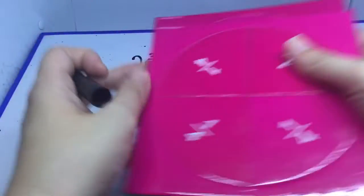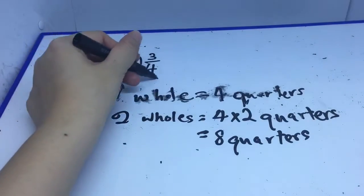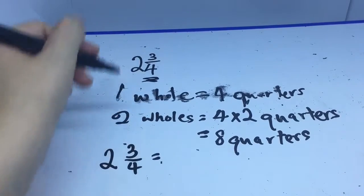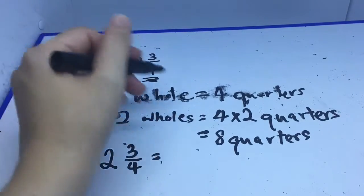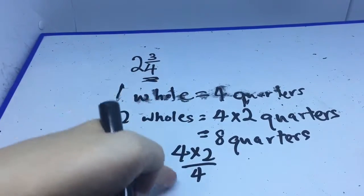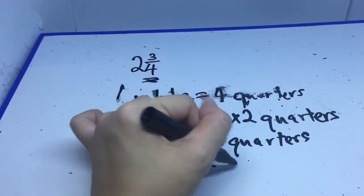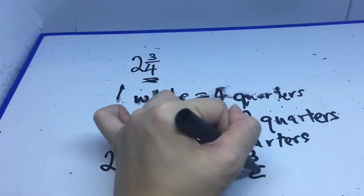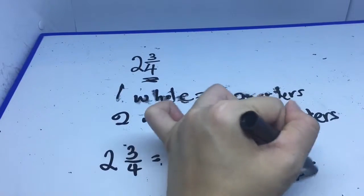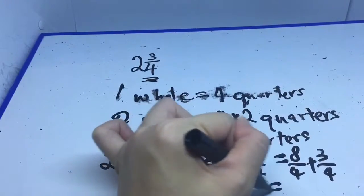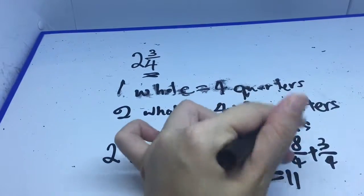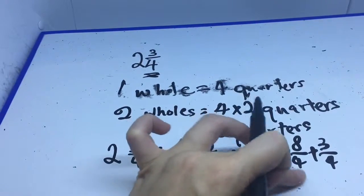But don't forget, we also have these three quarters here. So two wholes and three quarters equals to four times two quarters over here, four times two, plus another three quarters, which will give me eight quarters plus three quarters, which will be 11 quarters. 11 out of four or 11 quarters.